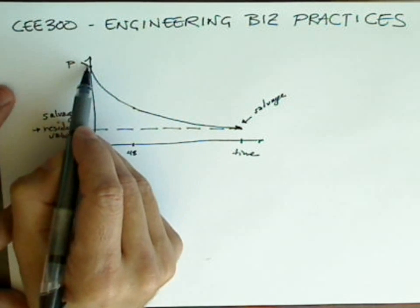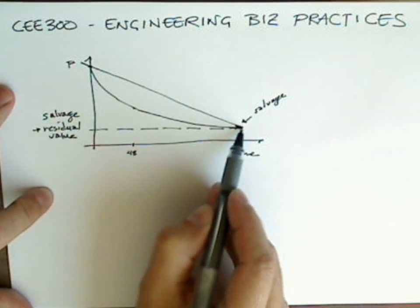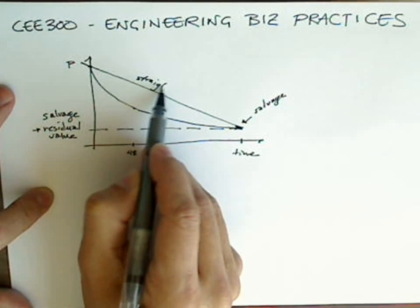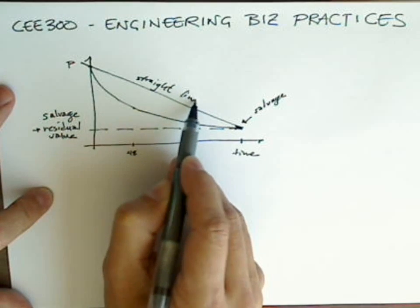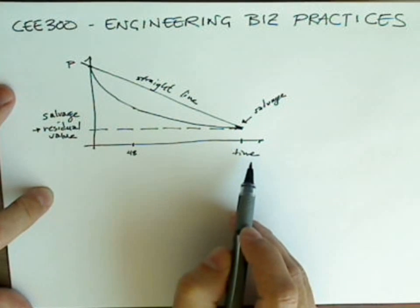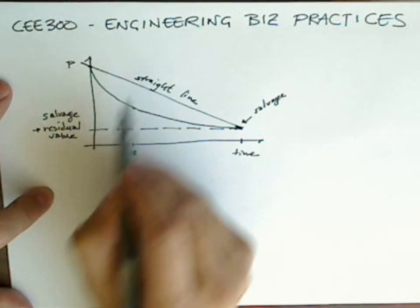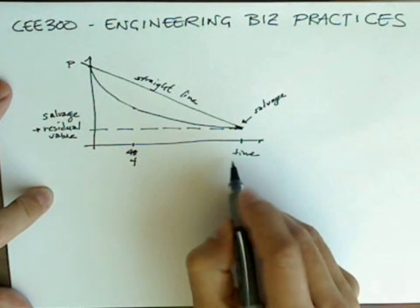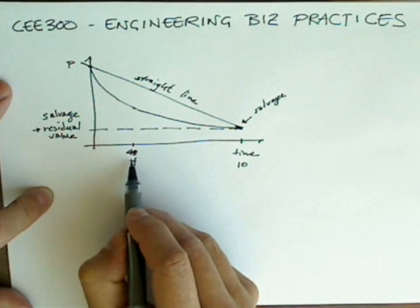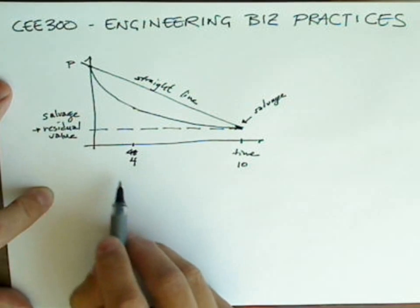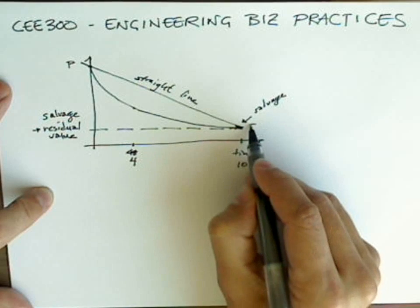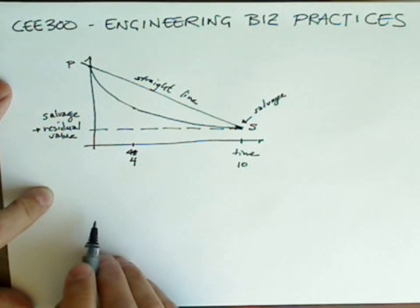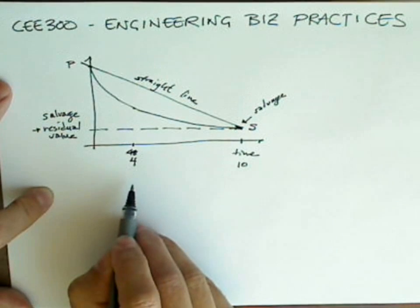The most common way of doing it is called straight line. And that's because drawing a straight line between two points is computationally the simplest. So you can understand that if this is a good with a lifetime of 10 years, I just changed from months to years now, and it depreciates from P to what we'll call S down here, the salvage value, over that period of 10 years, we could compute the book value.